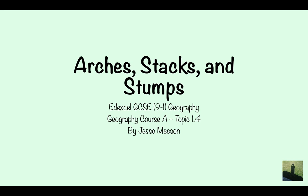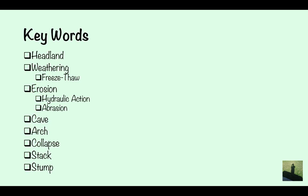Arches, stacks and stumps. Parts of the Edexcel GCSE 9 to 1 geography course. The keywords you're going to have to know for this are headland, weathering, which in this case is freeze-thaw, erosion, hydraulic action and abrasion, caves, arch, collapse, stack and stump.